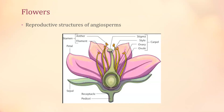The calyx consists of sepals — usually green and leaf-like, but not always. Next is the corolla, made of multiple petals — usually brightly colored, but not always. Next is the male whorl: stamens. Stamens have two parts — the tip is the anther, and the stalk that supports it is the filament.